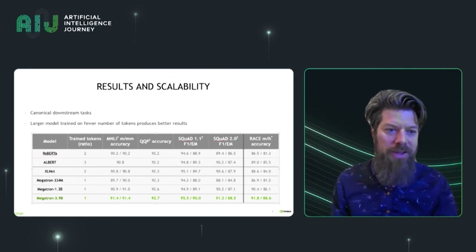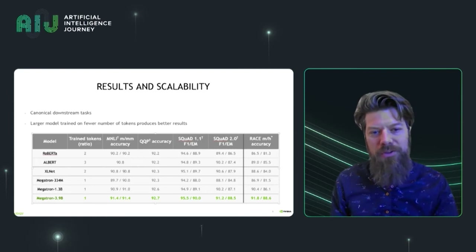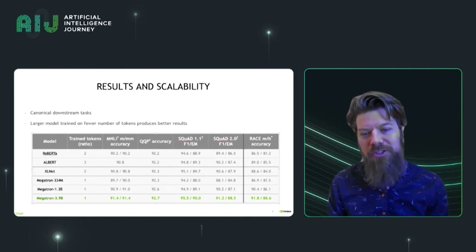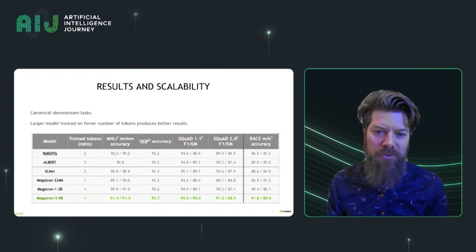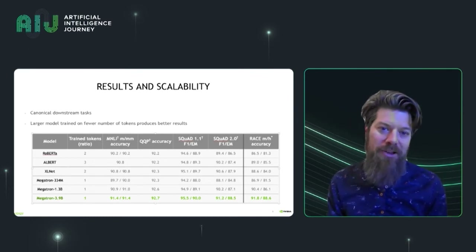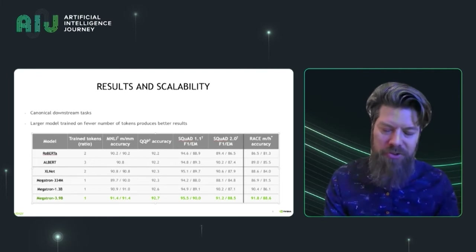When you train these models with these objectives, they learn a lot about the structure of language and how to analyze it. You start getting really amazing results on a large number of tasks used to measure discriminative language models. For example, the MNLI and QQP tasks from the GLUE benchmark are about entailment — whether text is connected to another piece of text. SQUAD is a question answering task. We see better and better results on these tasks as we increase model size. And the RACE benchmark — English comprehension tests from high school and middle school — shows these models are getting really close to human accuracy when trained on enough data.